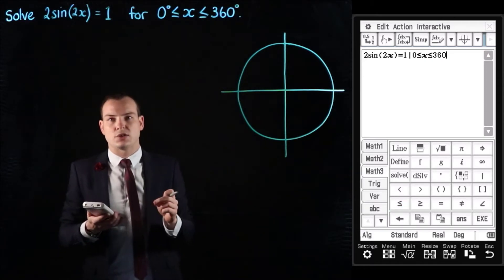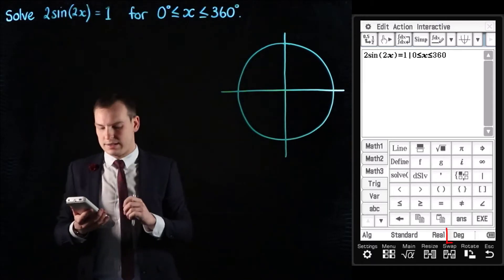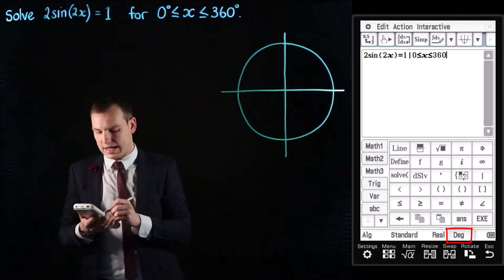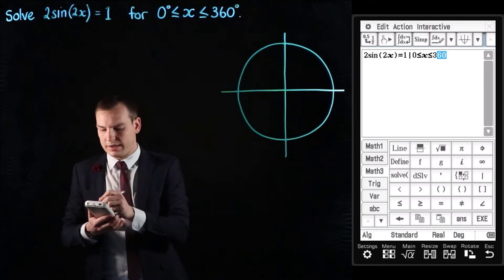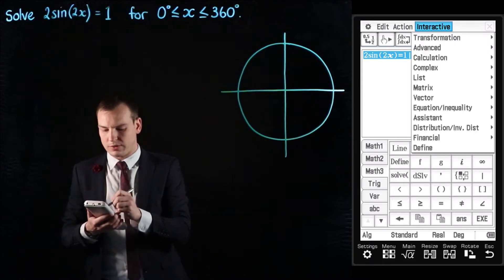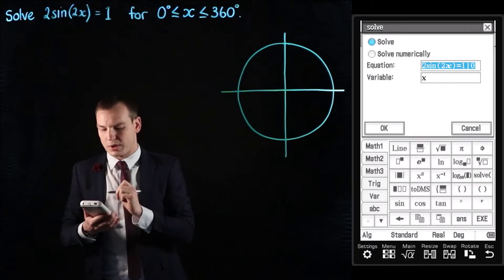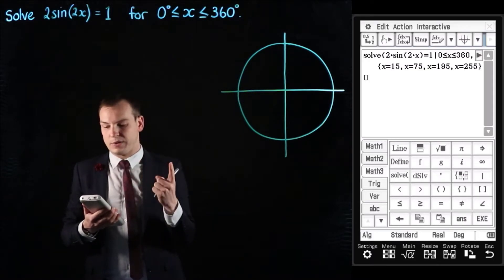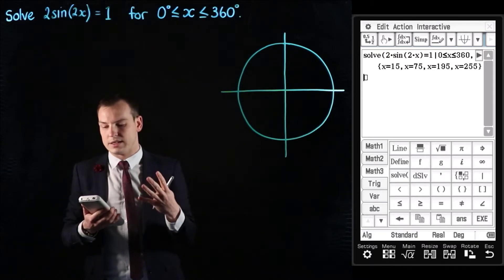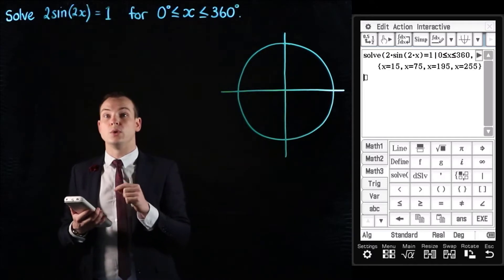It's worth just double checking that your calculator is in degrees mode for this question. Down the bottom we can see that degrees is there so we're all okay. Then we're just going to highlight the equation and go interactive, equation, and quality solve for x. We press OK and it gives us four solutions: x is 15, x is 75, x is 195, and x is 255. So those are the solutions to this problem.